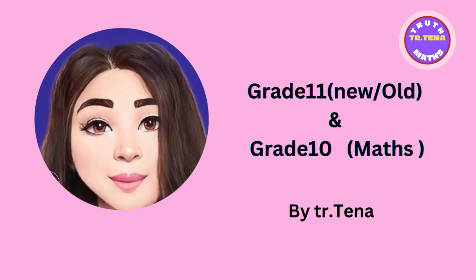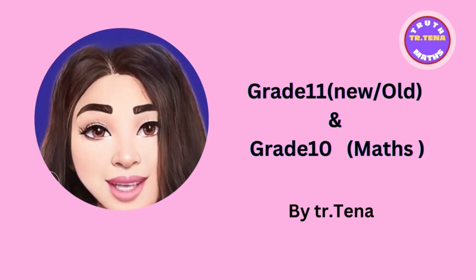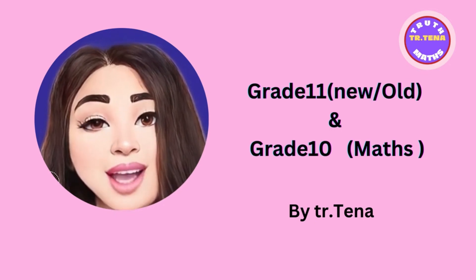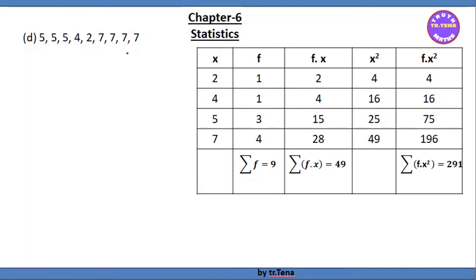How did you learn from grade 11? Grade 11 is chapter 6, in statistics, exercise 6.1. Number 3 is D, and number 3 is E and B.